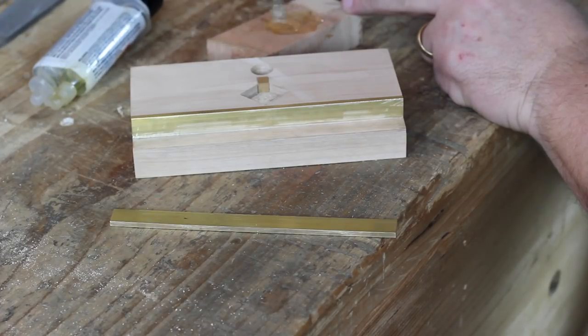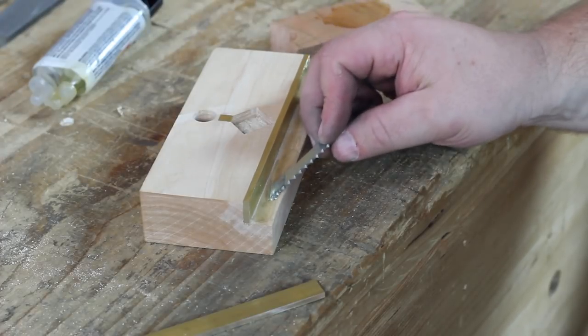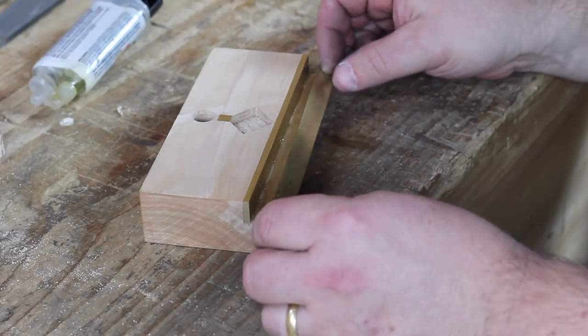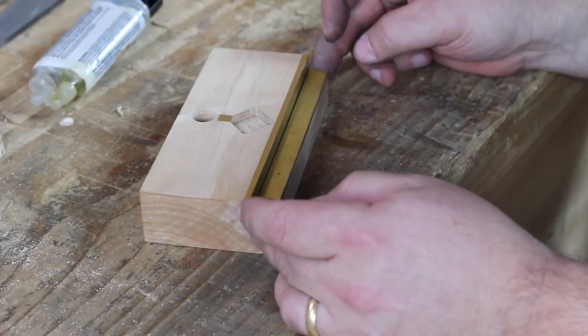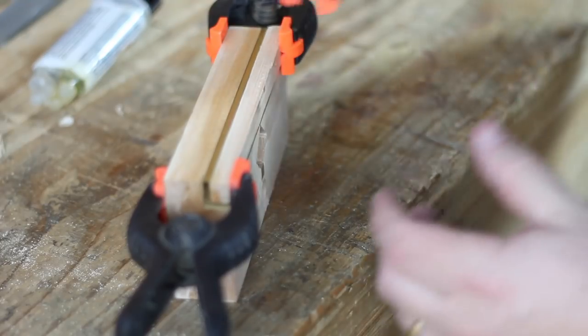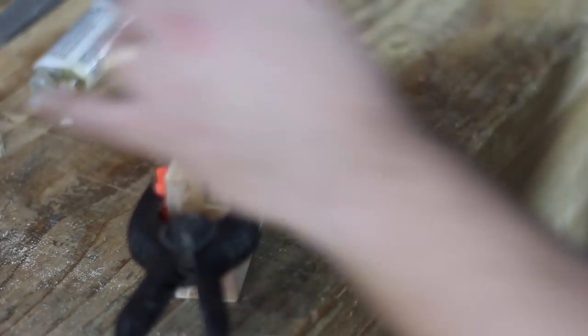Once cleaned, I mixed up some 30 minute epoxy, applied it to the fence, set the wear strips in place, and then clamped them to cure overnight. I also epoxied the brass thumb screw nut in position.